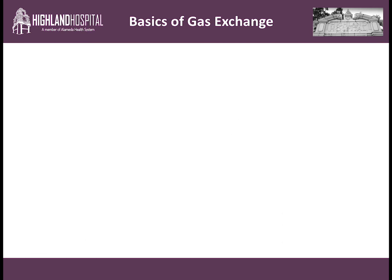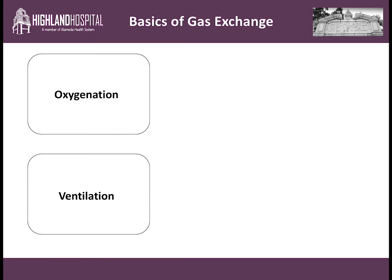Our third concept of the day: the basics of gas exchange. Number one, we are trying to oxygenate our patients, and we want to alter oxygenation based on what we see in our blood gases or oxygen saturations. And number two, we are ventilating patients — you'll get a blood gas back and want to know what settings on the ventilator are used to control CO2 elimination. So let's start with oxygenation. There are two predominant settings on the ventilator that will alter oxygenation: number one, how much supplemental oxygen we give — FiO2.